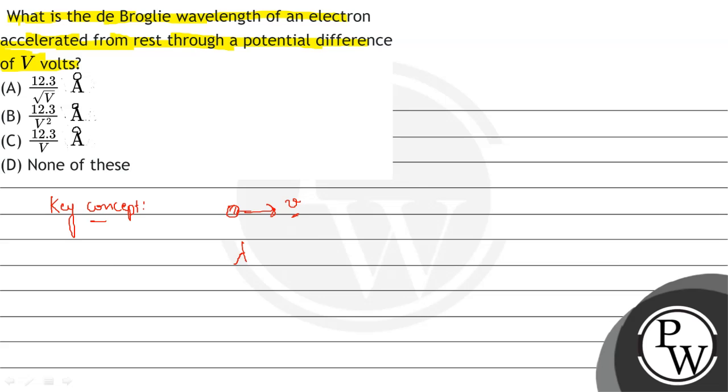So we can write this wavelength from the formula H by P which can be written further as under root 2 M K. We should remember this formula and derive it in the exam time.